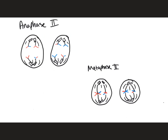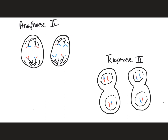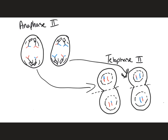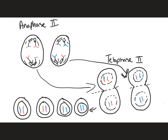From anaphase two we move into telophase two. In telophase two, the nucleus reforms, the sister chromatids have split, and we see the formation of the cleavage furrow in both cells. When both cells split, that results in the formation of four different cells. These four cells all look very different from one another, are haploid with 23 chromosomes each, and will become egg or sperm depending on whether you're talking about a female or male.